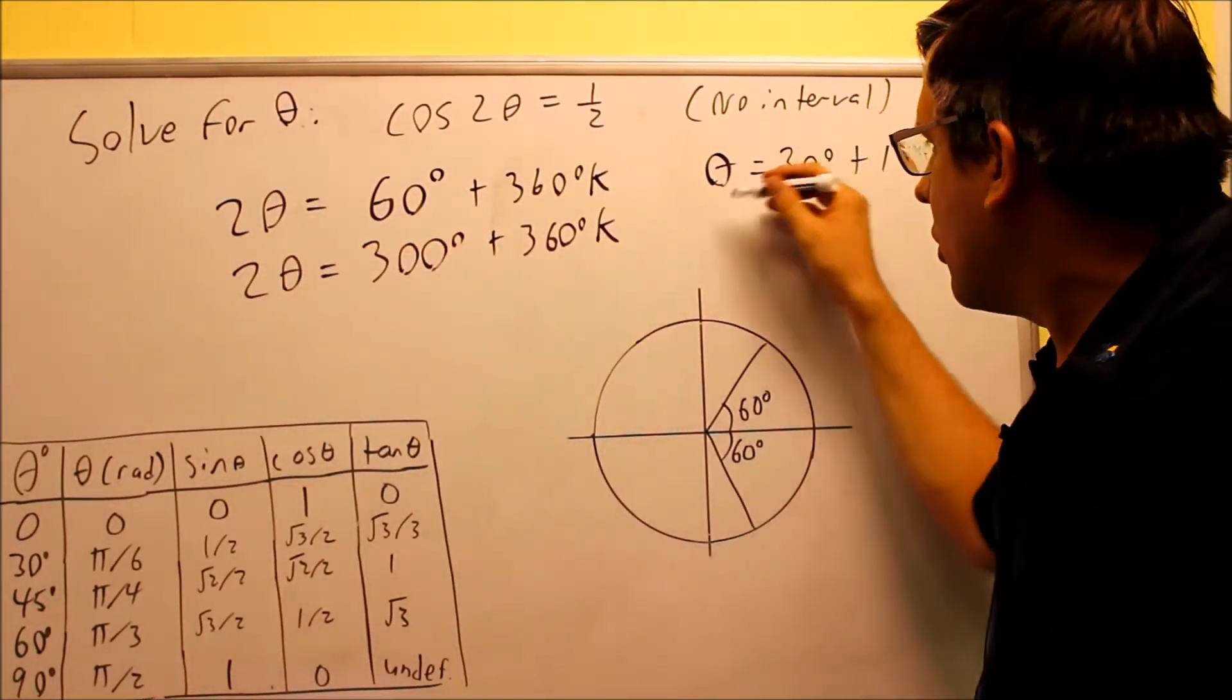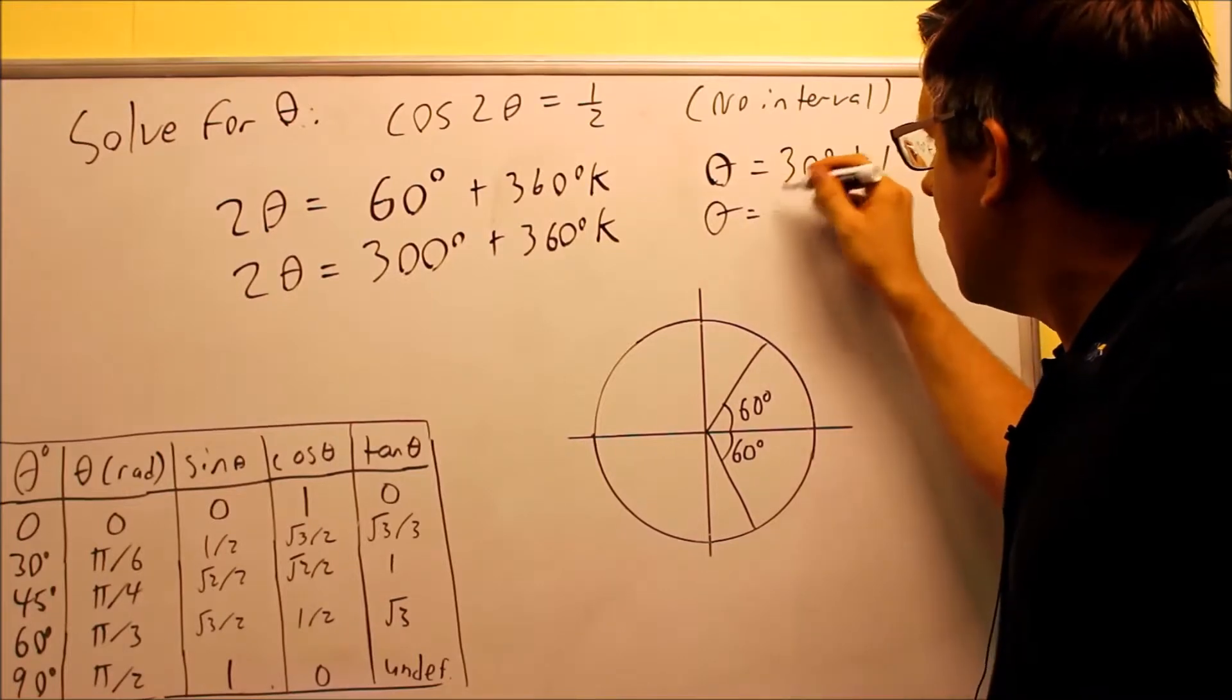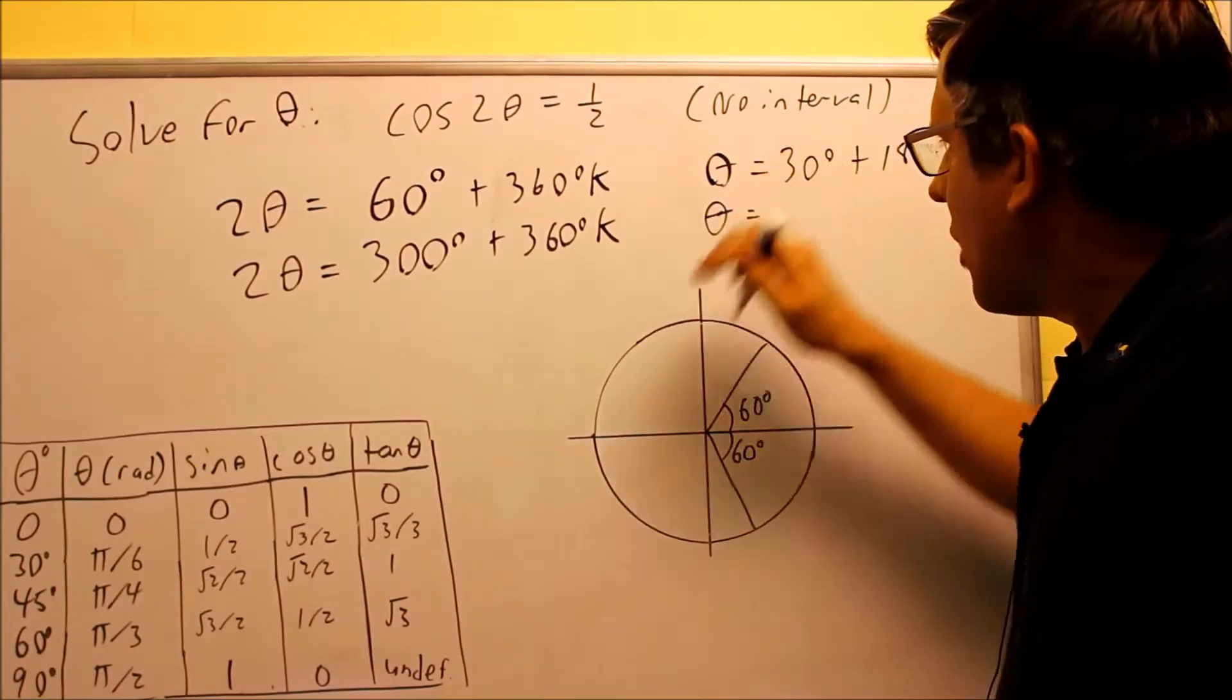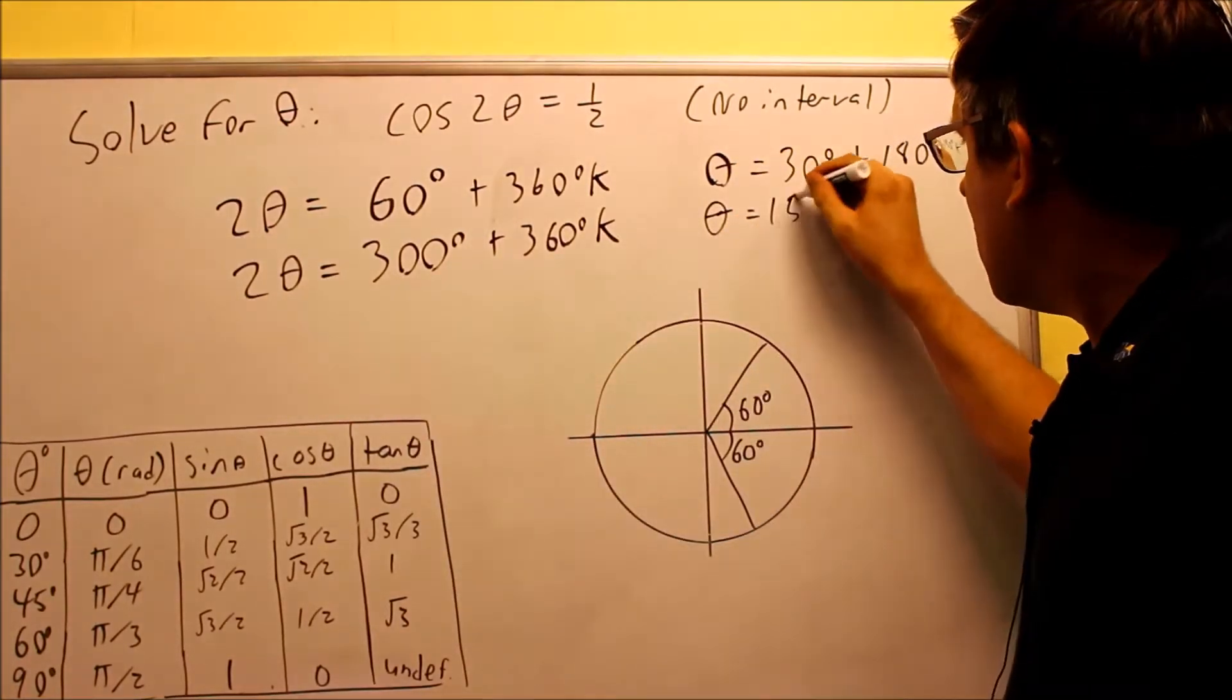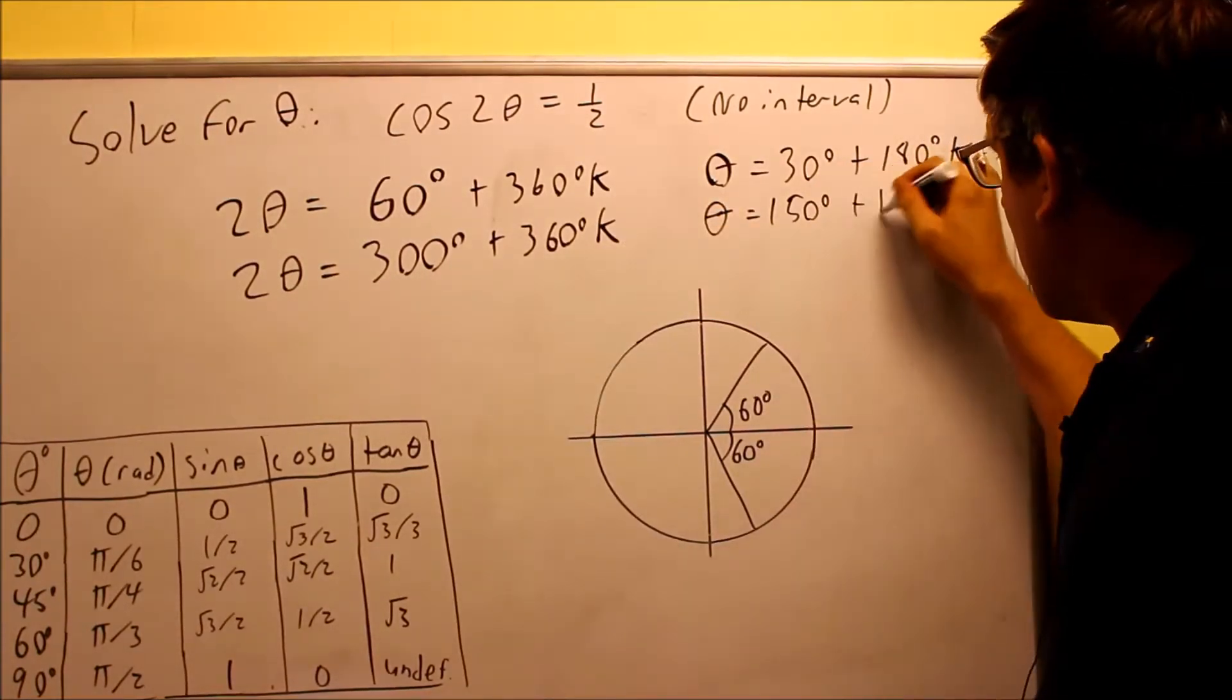We've got to do the same thing for this one down below, and we get theta is equal to, again, we're going to divide everything by 2. 300 divided by 2, 150. 360 divided by 2, 180 again.